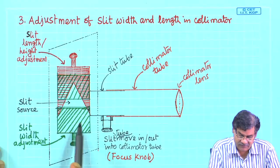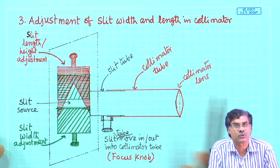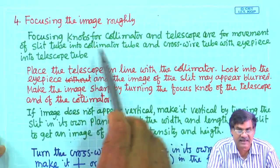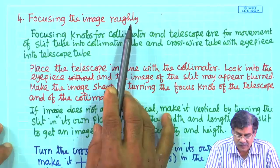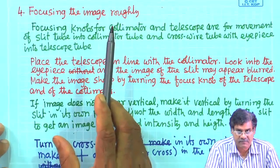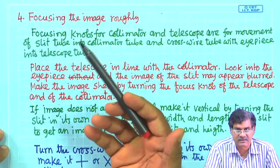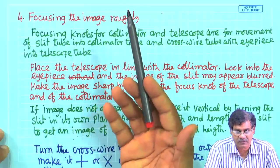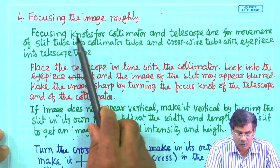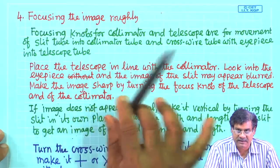This is the mechanism to adjust slit width and length in the collimator. Next, we have to go for focusing the image. The collimator is the source of light, the prism table holds the optical device — either lens, prism, or grating — and the telescope is for seeing the image.